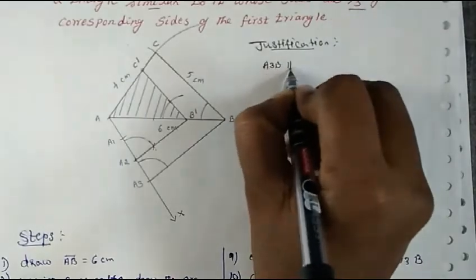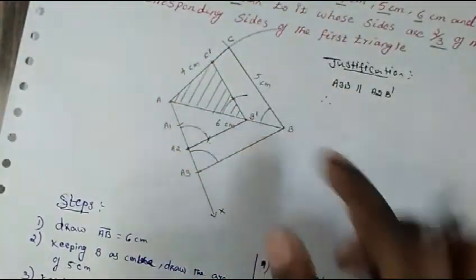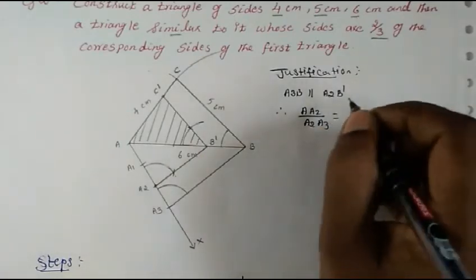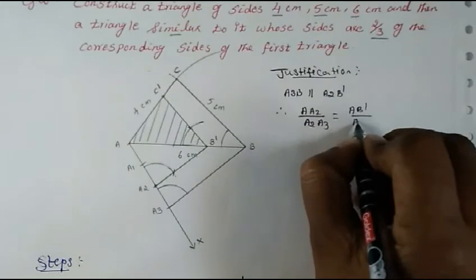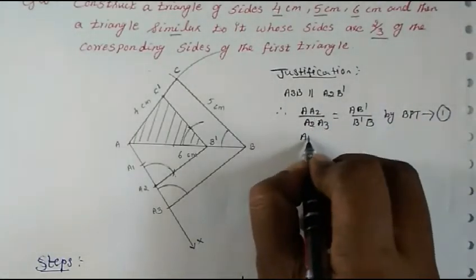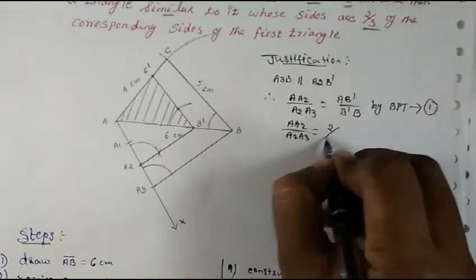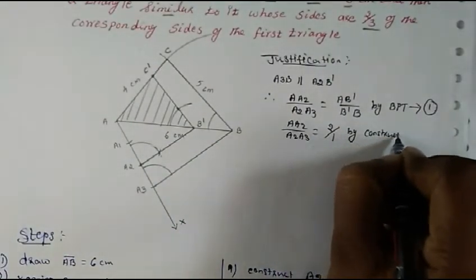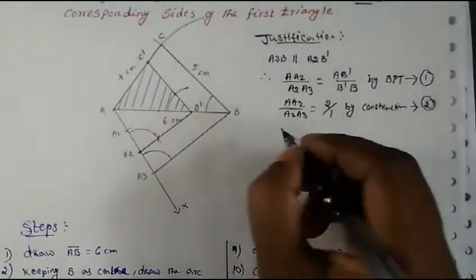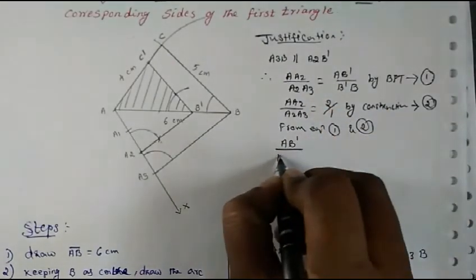Since A3B is parallel to A2B dash, by the Basic Proportionality Theorem, the ratio AA2 upon A2A3 equals AB dash upon B dash B — this is Equation 1. By construction, we made 2 parts and 1 part, so AA2 upon A2A3 equals 2/1 — this is Equation 2. From Equations 1 and 2, AB dash upon B dash B equals 2/1.